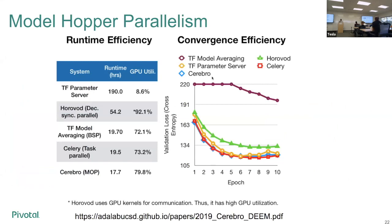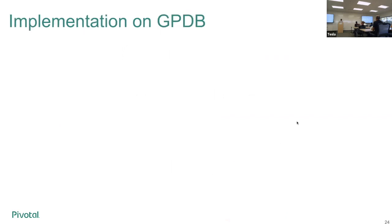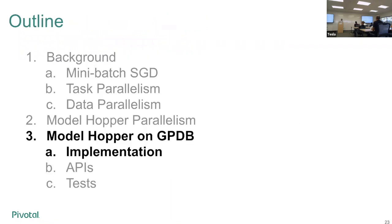Here are some results published in a workshop paper. The takeaway is that Model Hopper can be your optimal choice. Looking at the figures: it's the fastest, and it provides one of the best convergence behaviors — the lower the loss the better, and Model Hopper achieves that. That's essentially Model Hopper Parallelism — also known by its official project name, Cerebro.